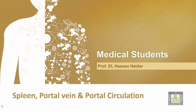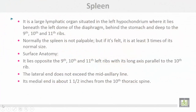Spleen and portal circulation. The spleen is a large lymphatic organ situated in the left hypochondrium, where it lies beneath the left dome of the diaphragm, behind the stomach, and deep to the ninth, tenth, and eleventh ribs. Normally, the spleen is not palpable, but if it is felt, it is at least three times its normal size.